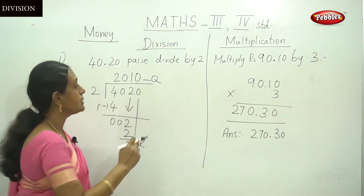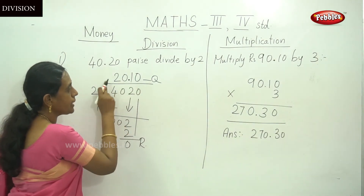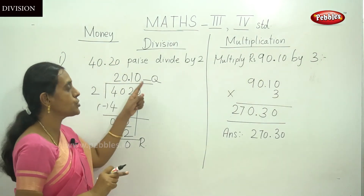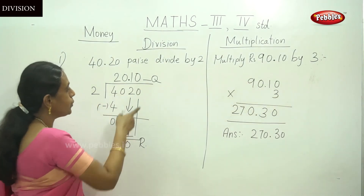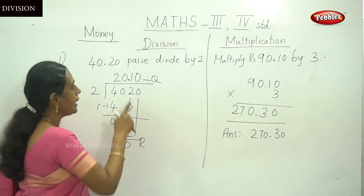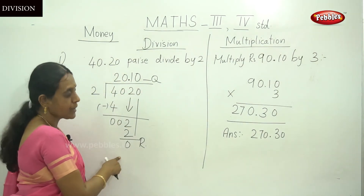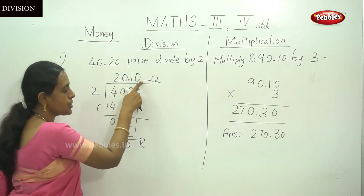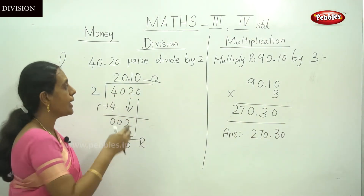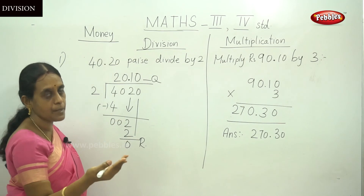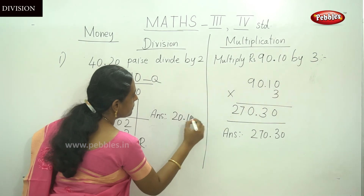After finishing the division, to express the answer in Rupees and Paise, place a dot in the quotient two places from the right to the left. So the quotient 2010 becomes 20 Rupees 10 Paise. The answer is 20 Rupees 10 Paise.